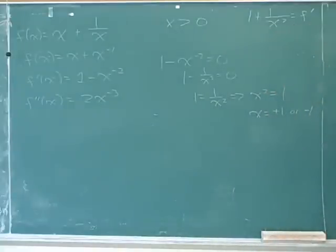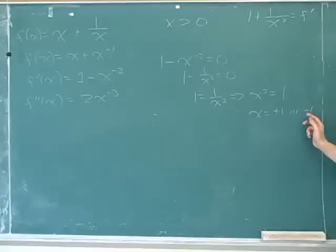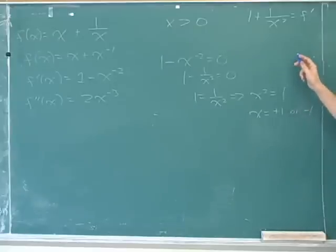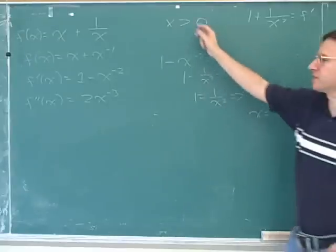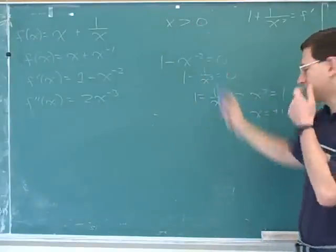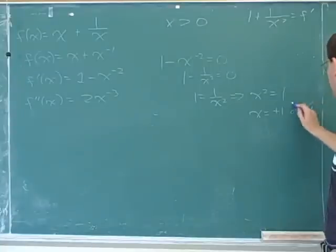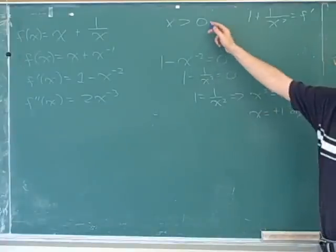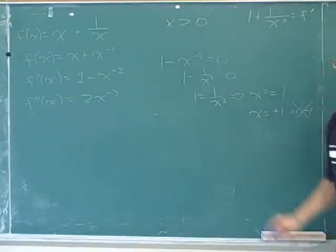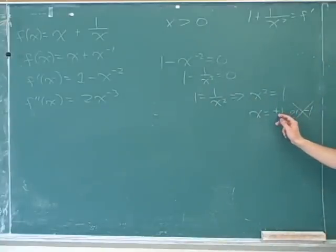We can see there are other critical points where x is positive one or negative one. But we can get rid of negative one for the same reason we got rid of zero — neither x equals zero nor x equals negative one is part of the range we're looking at. So the only critical point we care about is where x is equal to one.